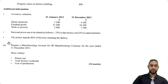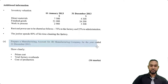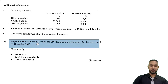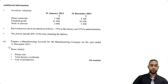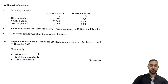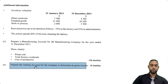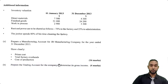The question specifically asks us to prepare a manufacturing account for JB Manufacturing for the year ended 31st December 2013, clearly showing prime cost, total factory overheads, and cost of production — worth 16 marks. We then have to follow it up with a trading account to determine the company's gross profit, worth 4 marks. Let's get into the solutions.